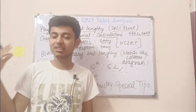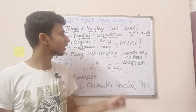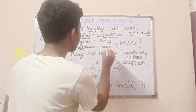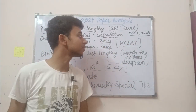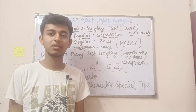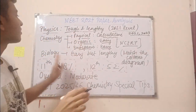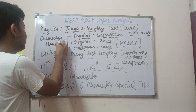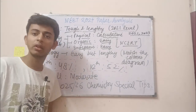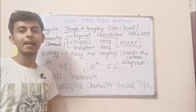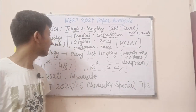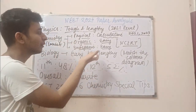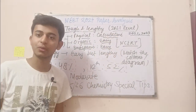Organic was easy — all the reactions, stability of carbocation, and GOC-related things were from NCERT; you could have solved them easily. Inorganic was also easy, basically along the lines of NCERT. So chemistry was one of the easiest sections this time for the person who has studied all the formulas and NCERT. My chemistry has personally gone really well, so I will be guiding you for chemistry throughout.